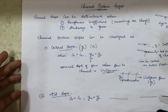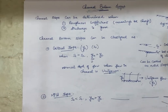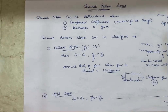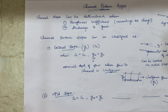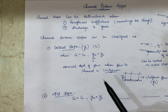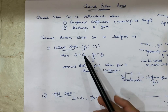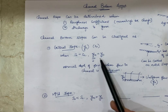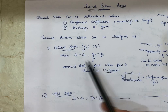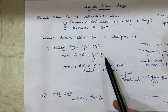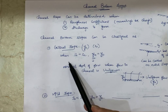So these were the five basic types of channel bottom slopes: critical slope, mild slope, steep slope, horizontal slope, and adverse slope. All these slopes are categorized and defined on the basis of two conditions — the relationship between normal depth yn and critical depth yc, and the relationship between bed slope S0 and critical slope Sc.